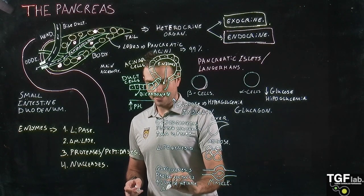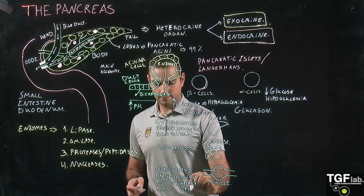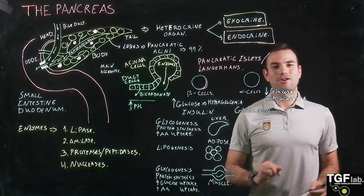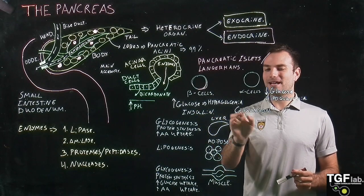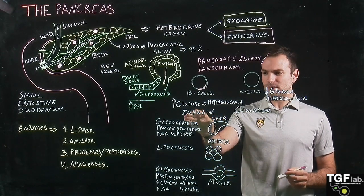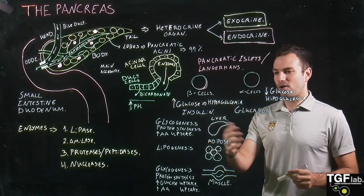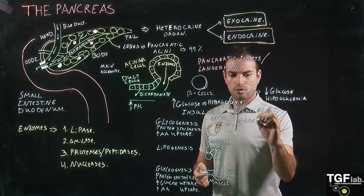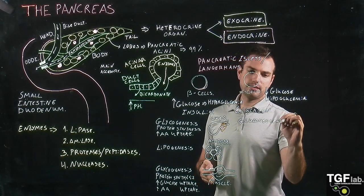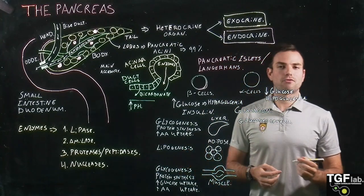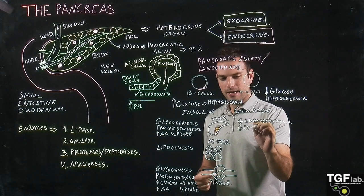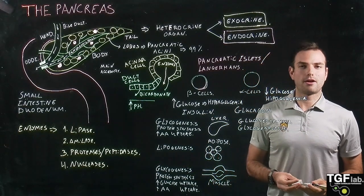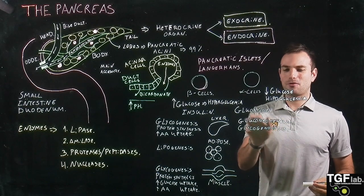In the muscle, insulin also promotes amino acid uptake. So that is insulin. Now we are going to look at the glucagon. Insulin and glucagon are antagonists — they have opposing results in our body. In the liver, glucagon is going to promote gluconeogenesis, which is the production of glucose. It is also going to promote glycogenolysis, which is the breaking of glycogen to generate more sugar for the gluconeogenesis process.